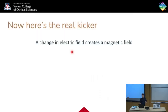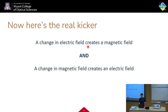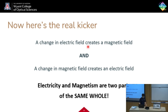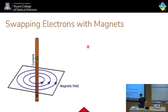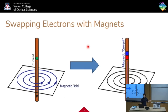Now here's the real kicker. I've told you that a change in electric field creates a magnetic field. But this also works vice versa: a change in magnetic field creates an electric field. It's because electricity and magnetism are two parts of the same whole. They are intertwined. Let's swap these around — before, we had a charge moving vertically and creating a circular magnetic field. Now let's have a magnet moving vertically. This would switch the properties and make a circular electric field.